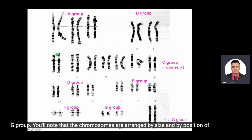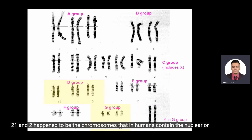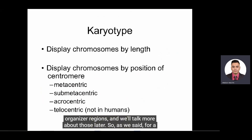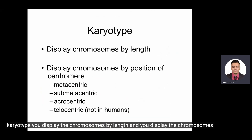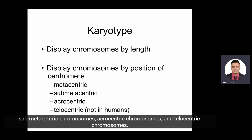The D group — chromosomes 13, 14, and 15 — and the G group — chromosomes 21 and 22 — happen to be the chromosomes that in humans contain the nuclear organizer regions, and we'll talk more about those later. For a karyotype, you display the chromosomes by length and by the position of the centromere.